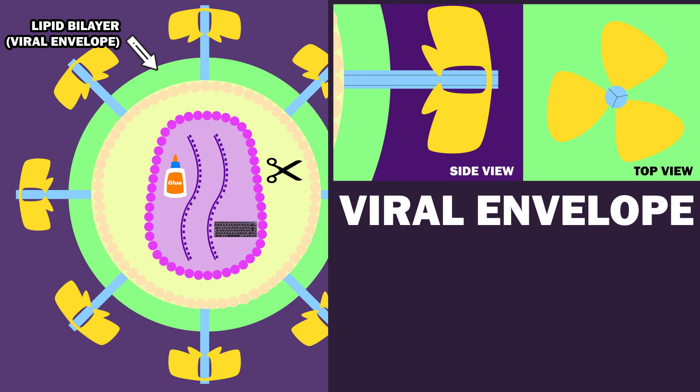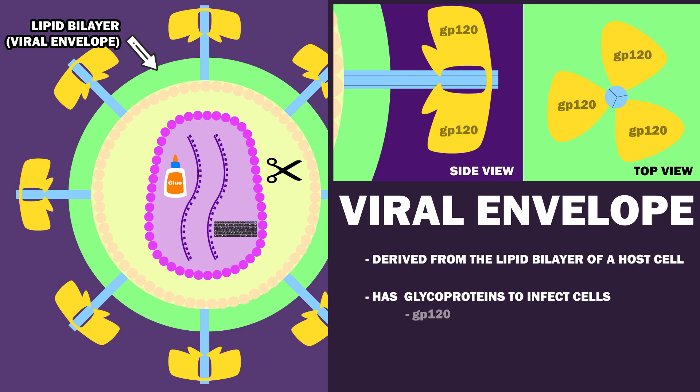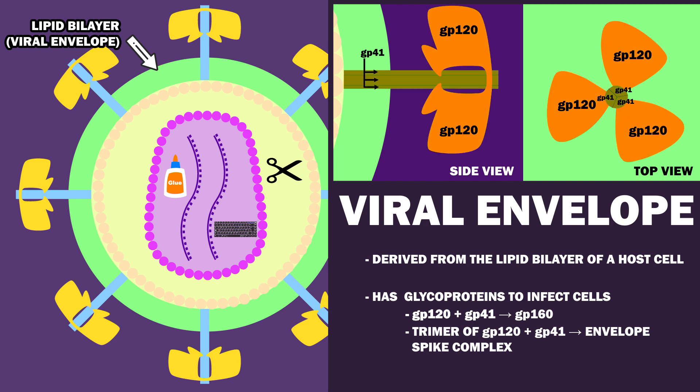The viral envelope is derived from the lipid bilayer of a host cell and has glycoproteins sticking out of it necessary for the virus to infect cells. These glycoproteins, GP120 and GP41, together form GP160. A trimer with three pairs of GP120 and GP41 glycoproteins forms an envelope spike complex.